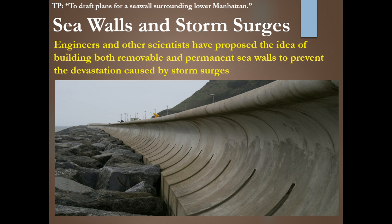Engineers and other scientists have proposed the idea of building both removable and permanent seawalls to prevent the devastation. Hurricane Sandy's estimated total damage was on the order of 30 to 50 billion dollars — about 50 billion dollars in damage — for New Jersey, Connecticut, New York, Long Island, the whole region. So that's a lot of money.